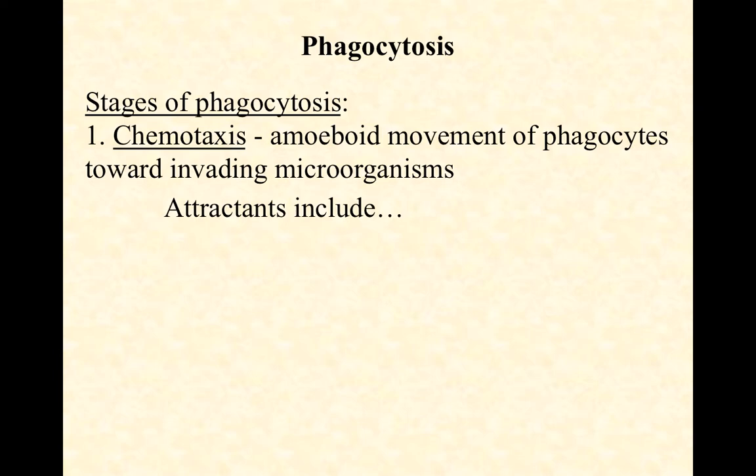Phagocytosis begins with chemotaxis — movement along a chemical gradient, either towards a chemoattractant or away from a chemo-repellent; in this case, towards a chemoattractant. Our white blood cells — our neutrophils and macrophages — move by amoeboid movement, literally crawling towards invading microorganisms. What do you think the attractants would be?